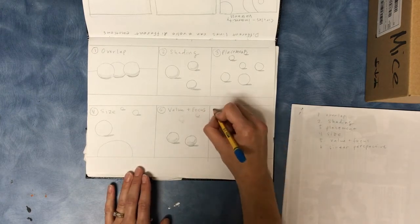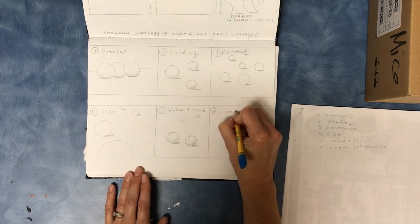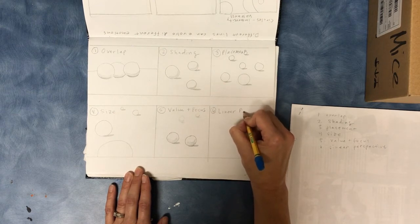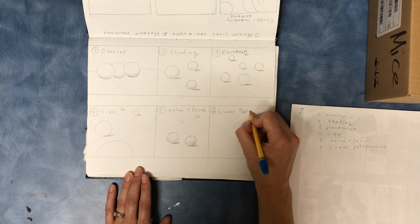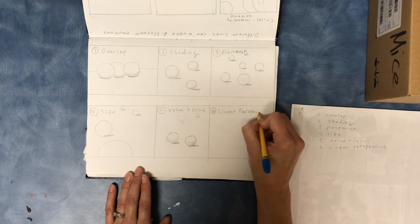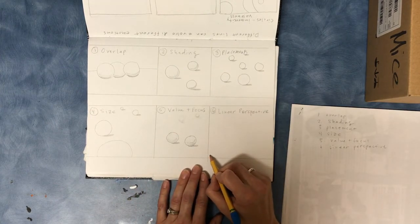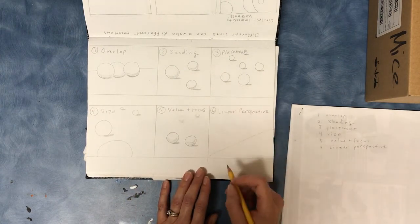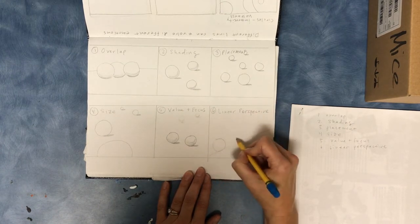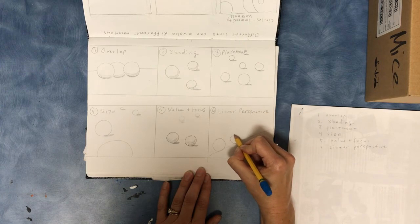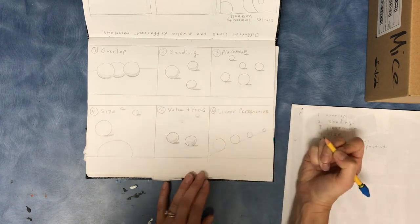And then the last one is linear perspective. That's just a fancy way of saying that as objects go back into space, they get smaller. So it's kind of like size, except we're going to put everything on a line. We're going to have our big objects in front, and then as they go back into space, they get smaller and smaller.